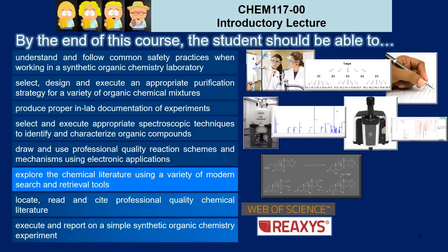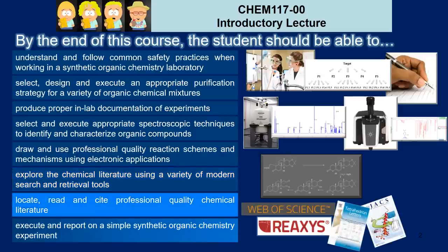Then we'll explore the chemical literature using a variety of modern search and retrieval tools available through the university. We'll learn to locate, read, and cite professional quality chemical literature so that when we build a report, we have a good foundation of information that we are leaning on.